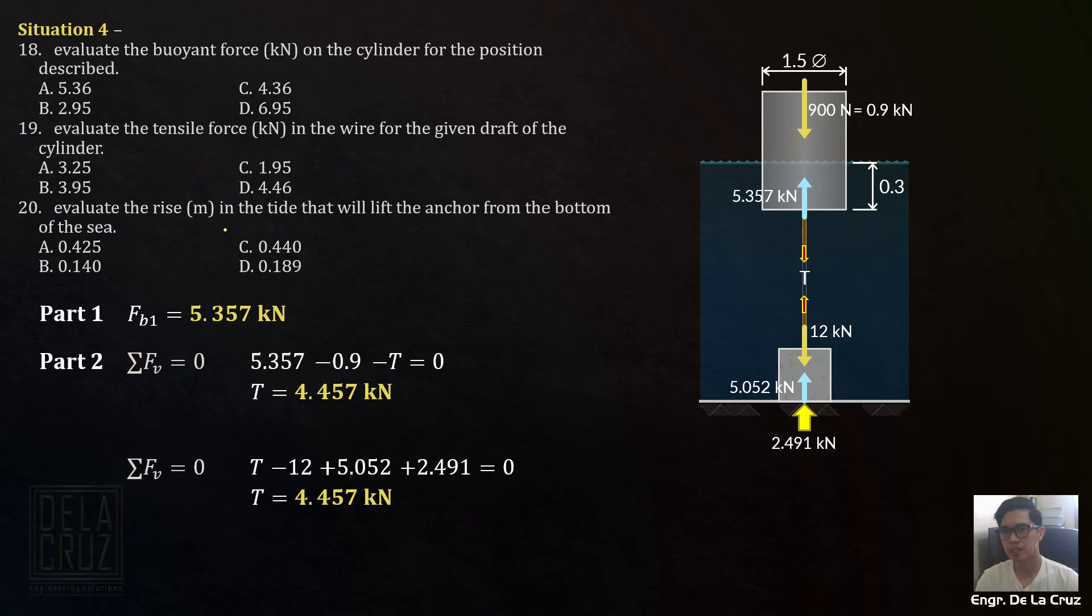Number 3. Evaluate the rise in meters in the tide that will lift the anchor from the bottom of the sea. It will be lifted. What will happen if it's lifted? The rise of tide - if this is lifted, then there's no more reaction here. That's the case, because it will be raised. There's no contact at that point. What will change here is that if there's a rise in tide, the buoyant force on the cylinder will change because the volume displaced will increase, or the volume submerged in water. The buoyant force on the bottom, for the anchor block, it's the same. It will not change because the whole block is still submerged there. Aside from that, the height will change. That's what we're looking for, the rise in tide.